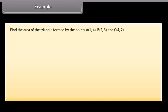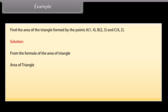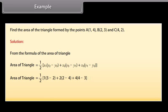Example: find the area of the triangle formed by the points A(1, 4), B(2, 3) and C(4, 2). Solution: from the formula, area of triangle equals 1 by 2 into x1 into y2 minus y3 plus x2 into y3 minus y1 plus x3 into y1 minus y2. We get 1 by 2 into 1 into 3 minus 2 plus 2 into 2 minus 4 plus 4 into 4 minus 3. On calculating, the area of triangle equals 1 by 2 square units.